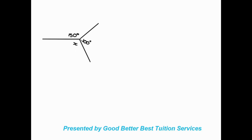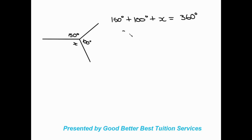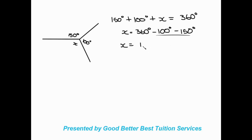Looking at this example, we have 150 degrees, 100 degrees, and we need to find x. These are all angles around a point, so we write: 150 degrees plus 100 degrees plus x equals 360 degrees. Keeping x on one side and taking the numbers to the other, x equals 360 degrees minus 100 degrees minus 150 degrees, which gives 360 minus 250, so x equals 110 degrees.